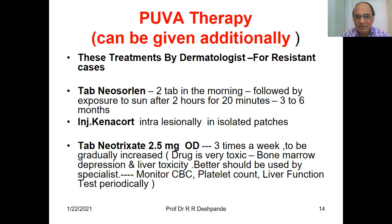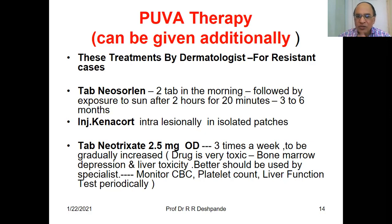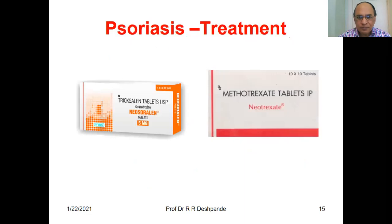Tablet Methotrexate 2.5 mg OD — three times in a week — because this is a very toxic drug, to be gradually increased. The drug is very toxic. It should not be used by a general practitioner — it is the duty of a consultant. Bone marrow depression may occur. Liver toxicity may occur. It should be used by a specialist because we have to check the blood count — whether there is neutropenia or pancytopenia — platelet count, and liver function tests done every month periodically. This is Neocerylene tablet and Methotrexate — be careful about this medicine.